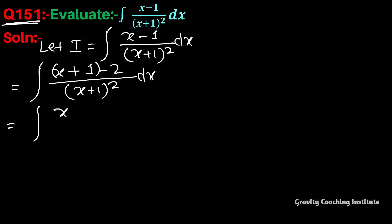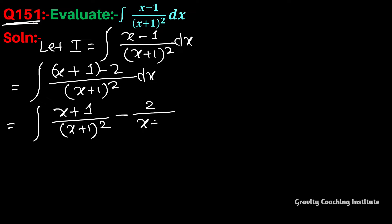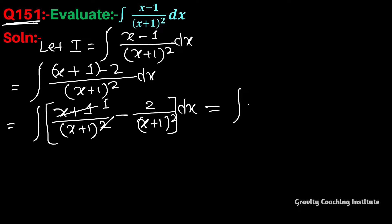We will split this fraction: (x plus 1) by (x plus 1) whole squared minus 2 by (x plus 1) whole squared dx. The (x plus 1) square over (x plus 1) cancels, giving integration of 1 by (x plus 1) minus...